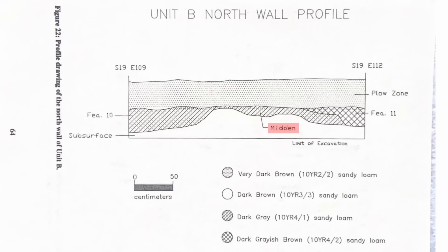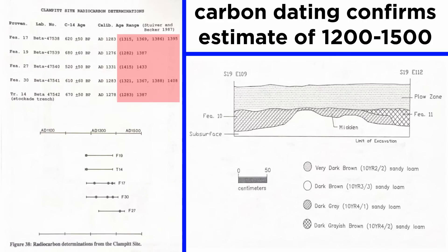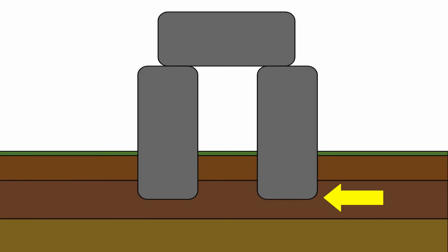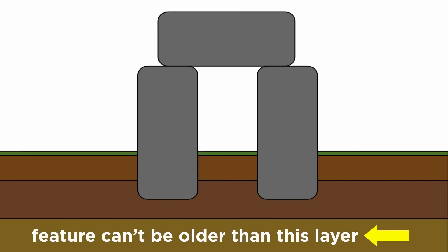Five features in this level were radiocarbon dated, all giving dates from 1300 to 1450, as shown in Figure 38. This means that all features sitting atop this subsoil layer date to no older than 1300. Many alternate historians claim things like, this structure might be much older than we think it is. However, if we have a reliably dated layer that a feature sits on top of, the feature can't be older than that. Suppose we have a stone monument — we look for the lowest layer the feature inhabits to date it. If the soils under the feature are undisturbed, the feature cannot be any older than this layer.